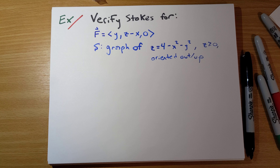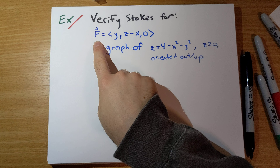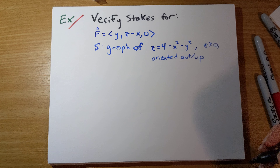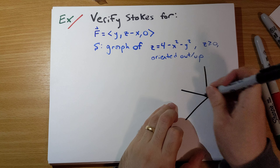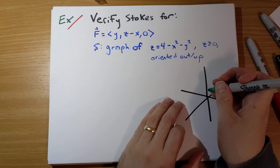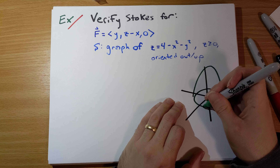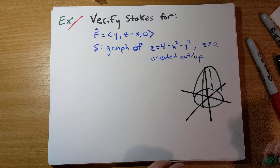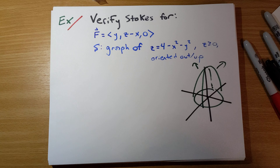Let's verify Stokes' theorem for this vector field F. S is the graph of z = 4 - x² - y², with z greater than or equal to zero, oriented with the normal vectors pointing upwards and outwards.